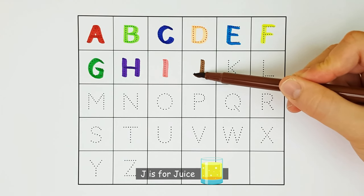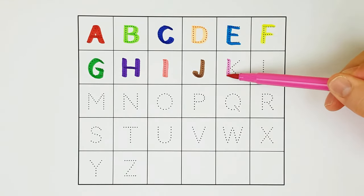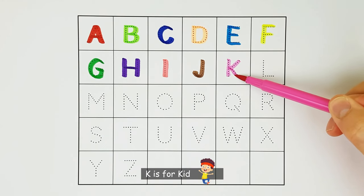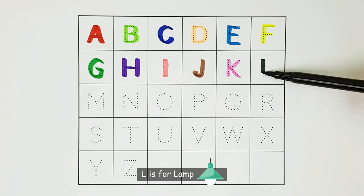J. J is for juice. J. K. K is for kid. K. L. L is for lamp. L.